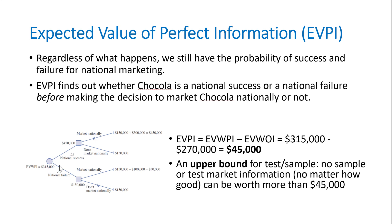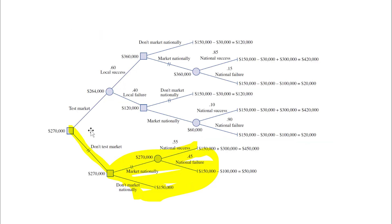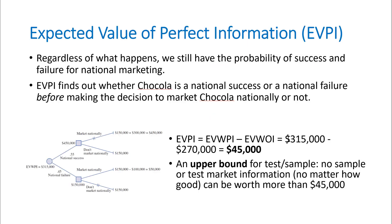So $350,000 is the Expected Value With Perfect Information — if we knew everything. What we have right now, without any prediction, is that there's a 55% chance of winning and a 45% chance of losing, and choosing to market nationally gives an expected value of $270,000 — that's EVWOI. The best possible prediction can increase expected value to $350,000, but without prediction we already have $270,000. The difference — $45,000 — is EVPI. So if someone offers a test market costing $50,000 claiming perfect accuracy, we wouldn't pay it, because even perfect information is worth no more than $45,000.